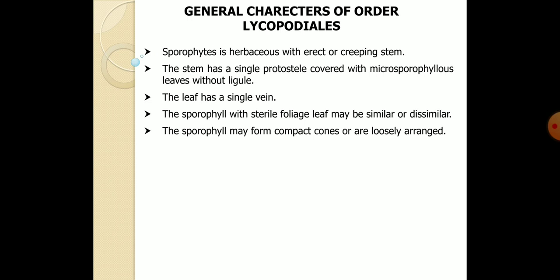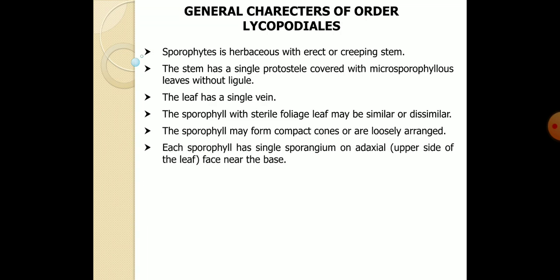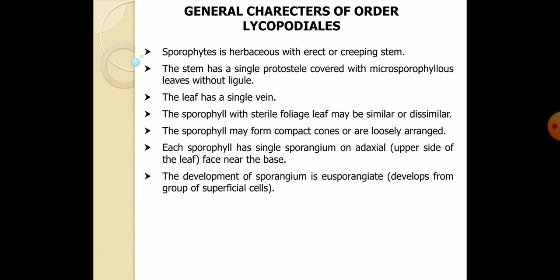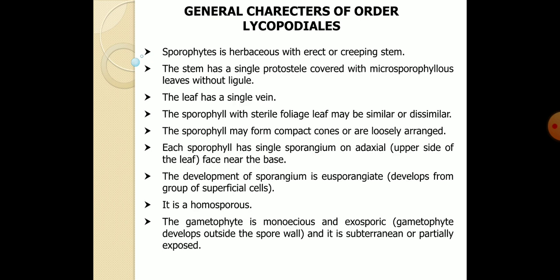Usually the sporophyll with sterile foliage leaf may be similar or dissimilar, and sporophylls are compactly or loosely arranged on the main stem. Each sporophyll has a single sporangium on the upper side or tip of the leaf. Usually the sporangium is developed from a eusporangiate structure, meaning it is developed from the superficial cells of the stem.